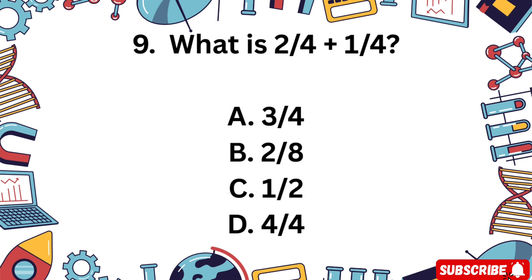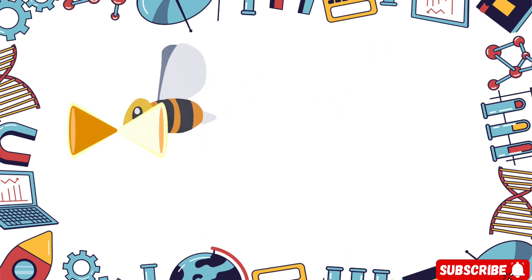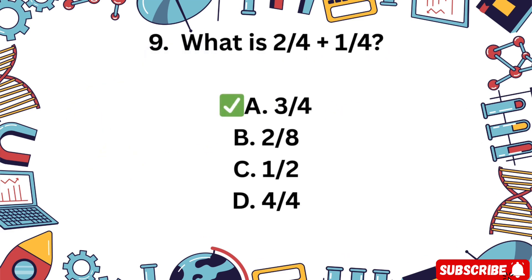Question 9. What is 2/4 plus 1/4? A 3/4, B 2/8, C 1/2, D 4/4. Add the fractions. Your 5 seconds start now. The correct answer is A 3/4.